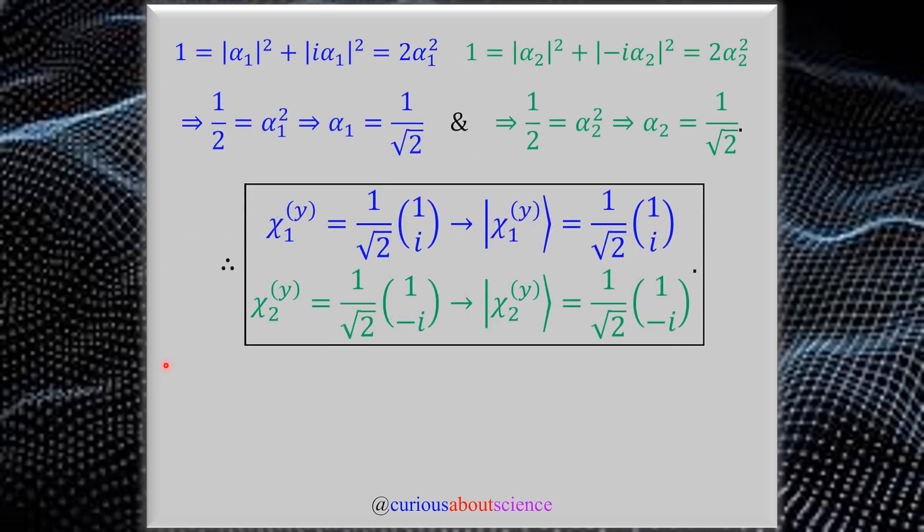We know that in quantum mechanics we have to be normalized. So we normalize in order to solve for alpha 1. Take the inner product with the matrices, and we see that we get alpha 1 magnitude and the second entry's magnitude squared as well. All has to equal 1. After the arithmetic, you see that 1 equals 2 alpha 1, so we get that famous 1 over square root 2.